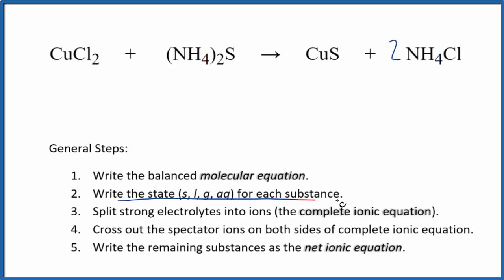Now we can write the state for each substance. Chloride is very soluble if you know your solubility rules, aqueous. That will dissolve and dissociate into its ions. The ammonium compound is also very soluble, aqueous.